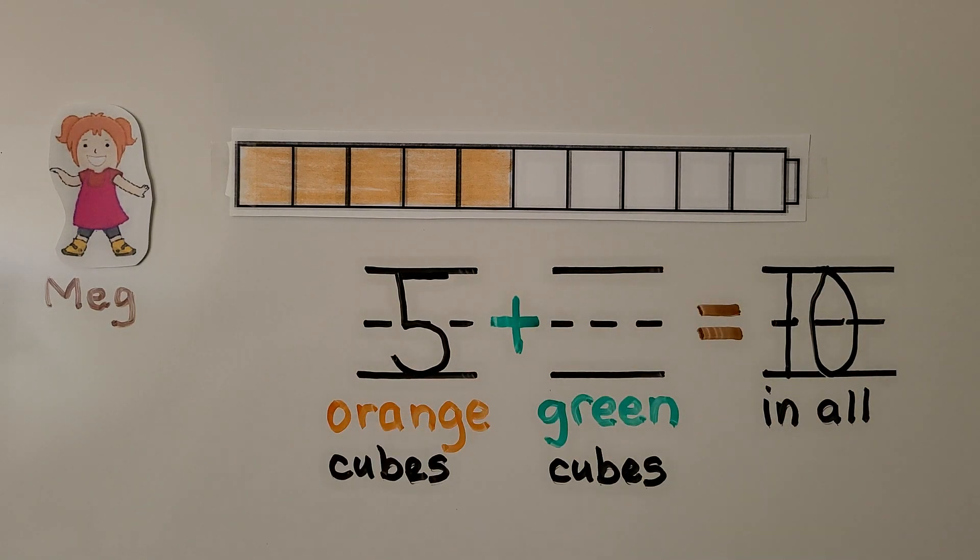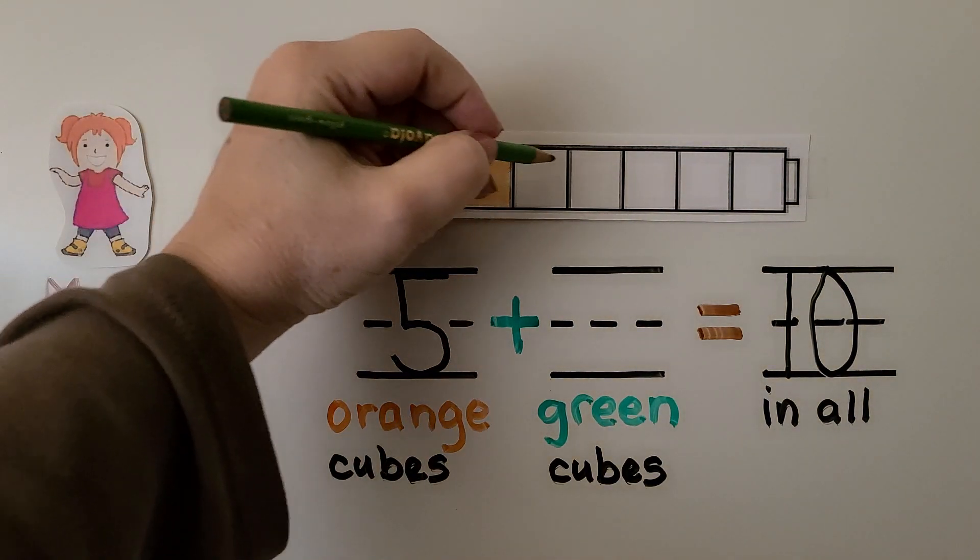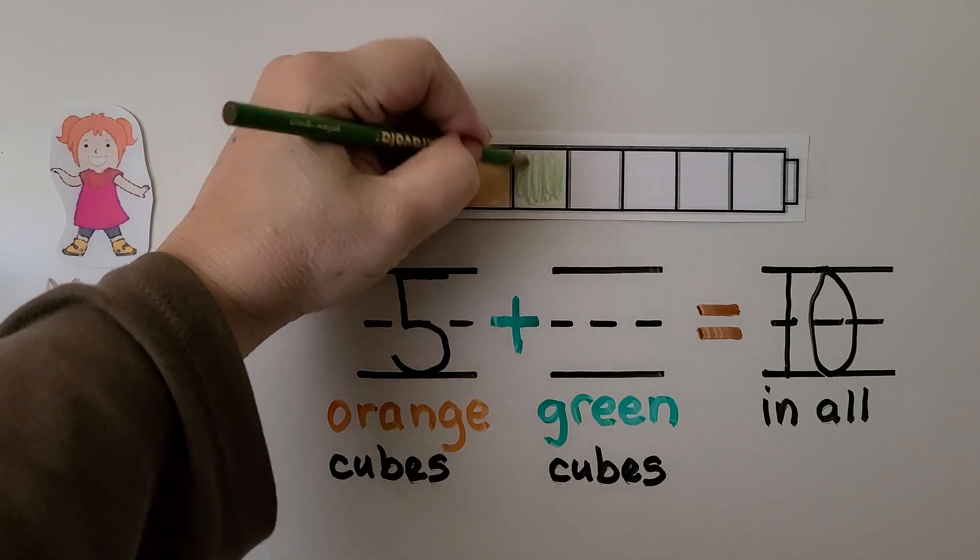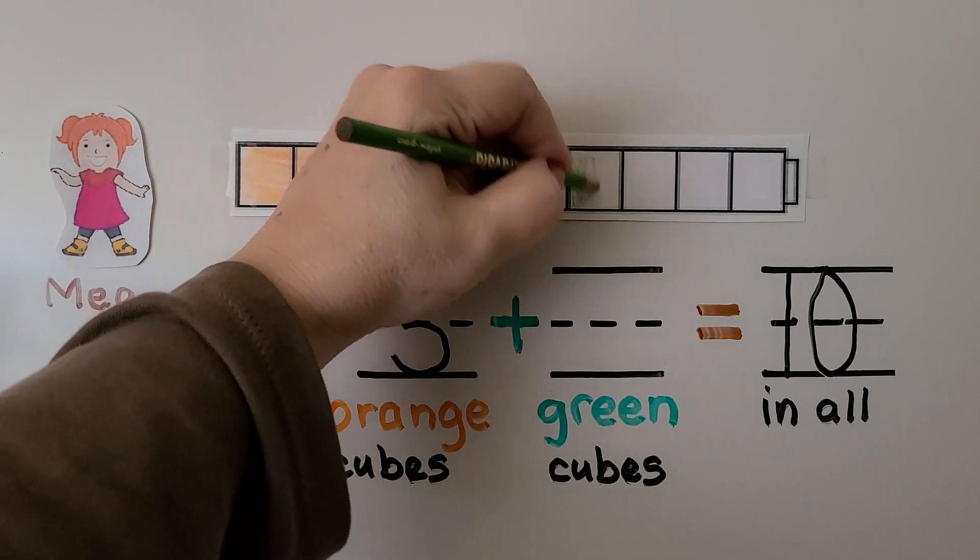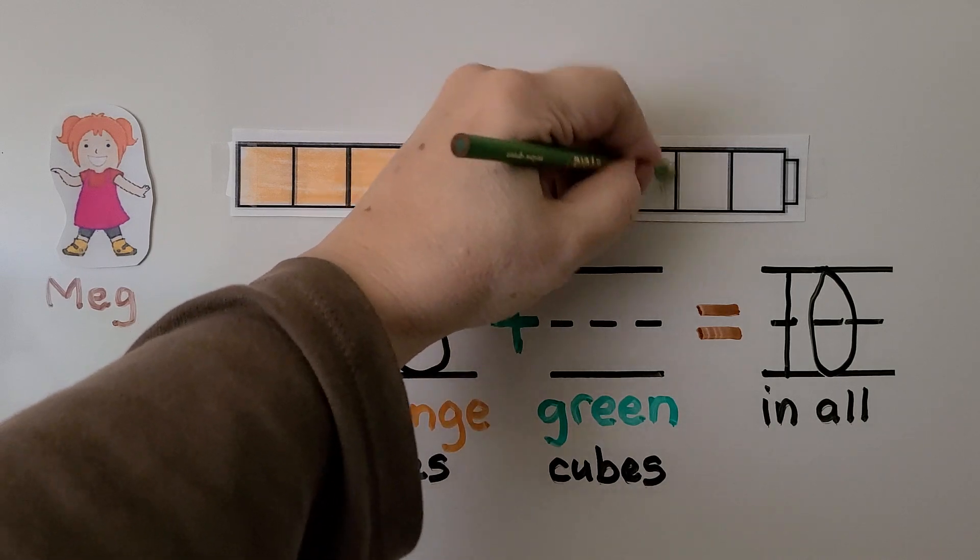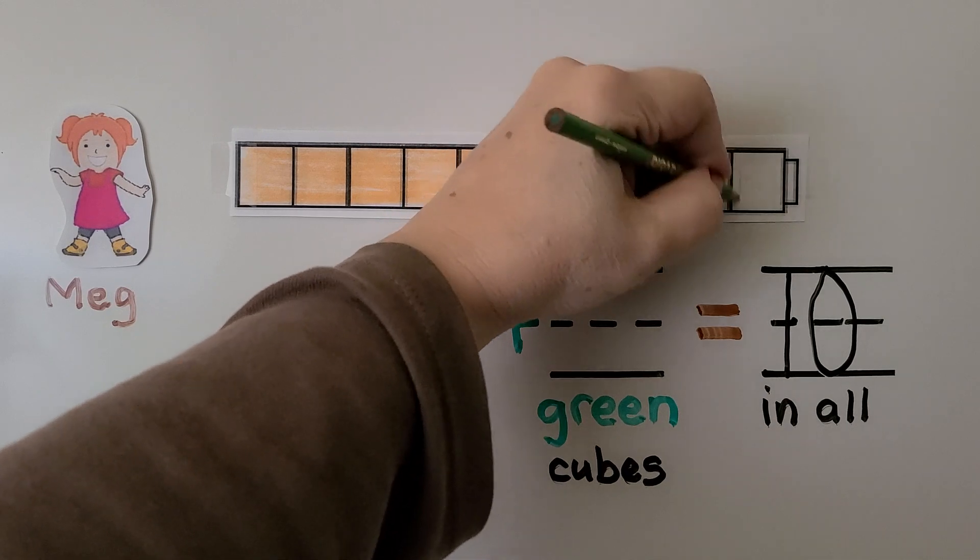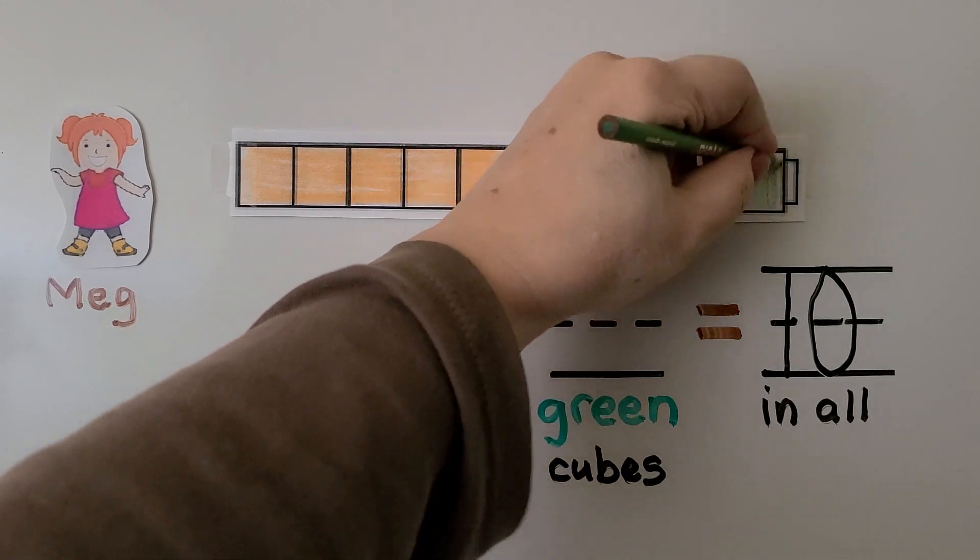We have 10 in all. We need to find how many green cubes we need to color so that she will have 10. We have 5, we can color them in. That would be six, seven, eight, nine, and one more green one would be 10 in all.